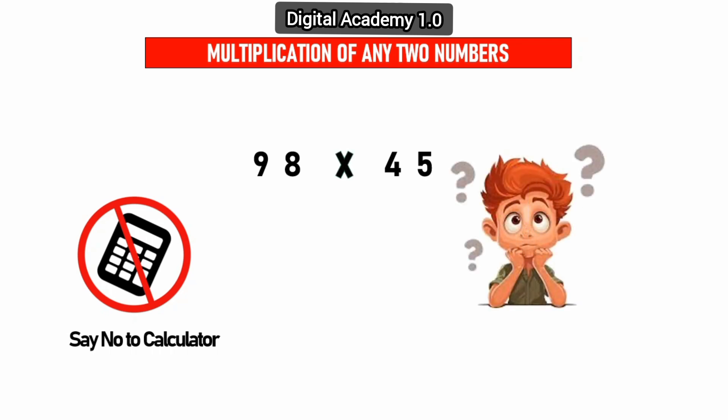In the first step, we need to multiply digit first by third digit. Like 9 times 4 equals 36. Similarly, digit second by fourth. Like 8 times 5 equals 40.